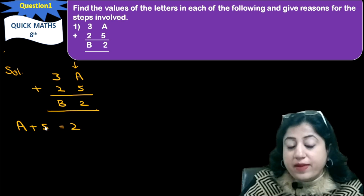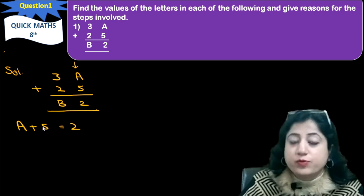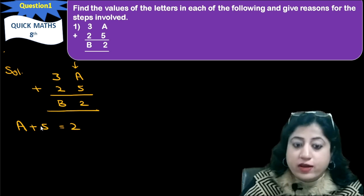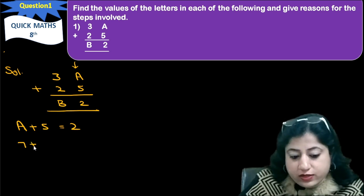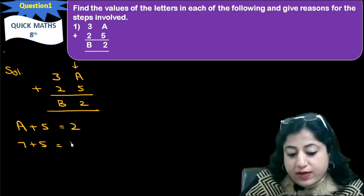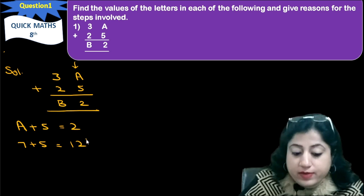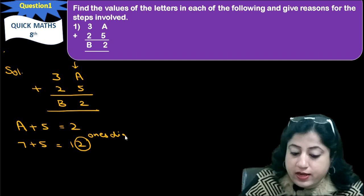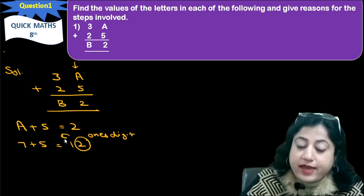Obviously, what can we add in 5? If we add 7, because 5 plus 7 gives 12. So if we add 7 to this, we get 12. 12 means this will come once digit and this will come carry.